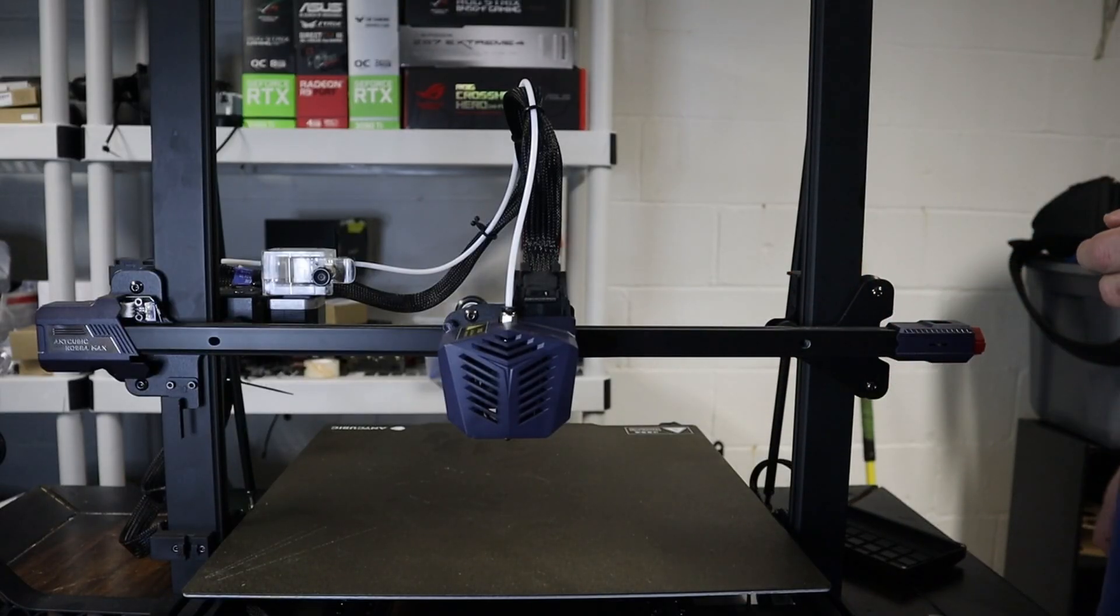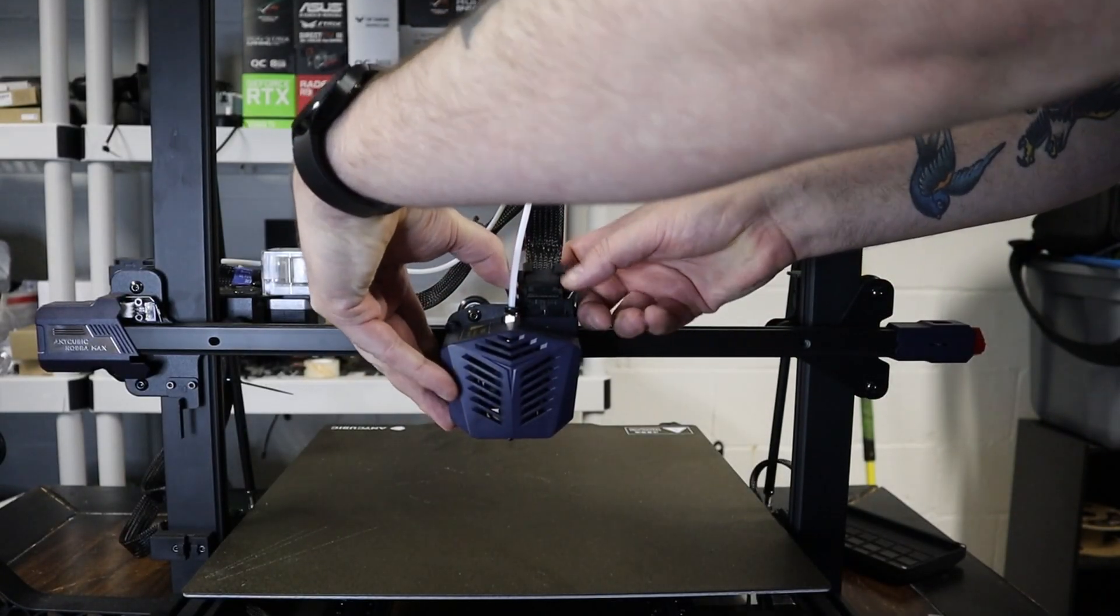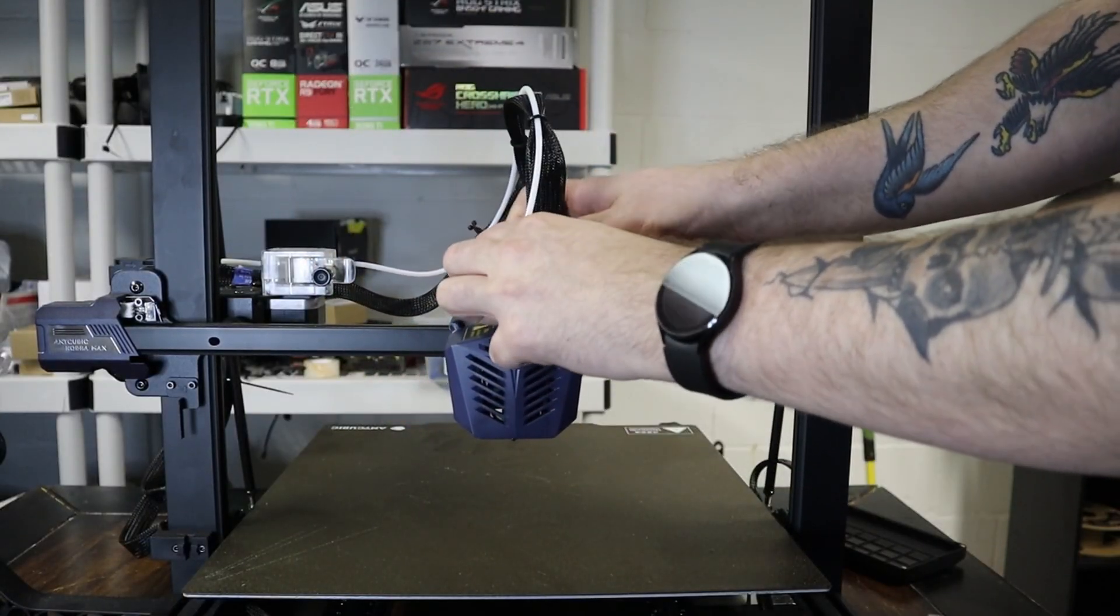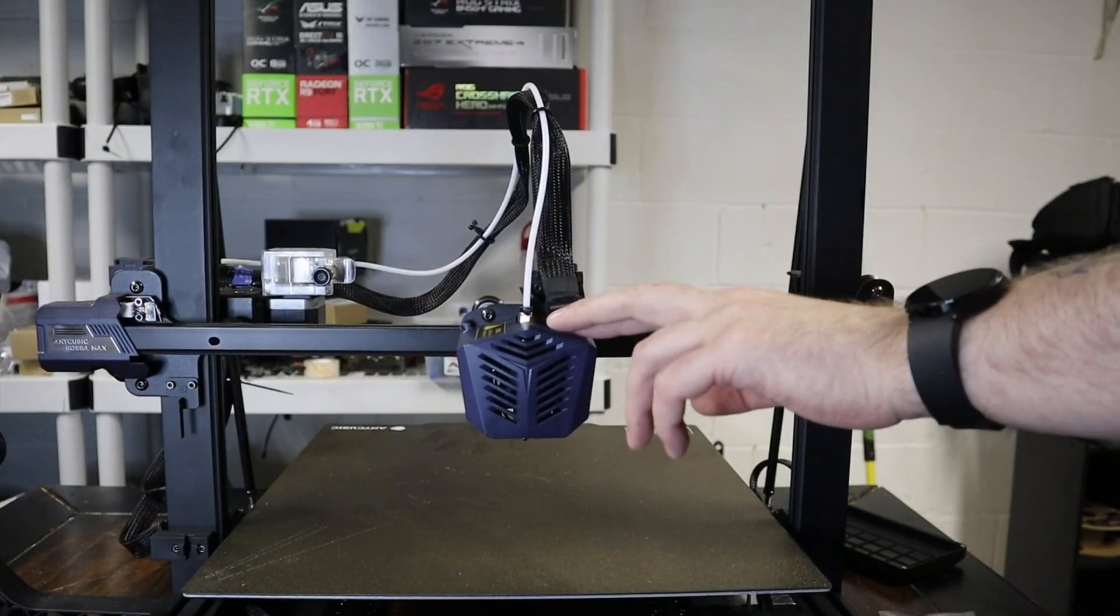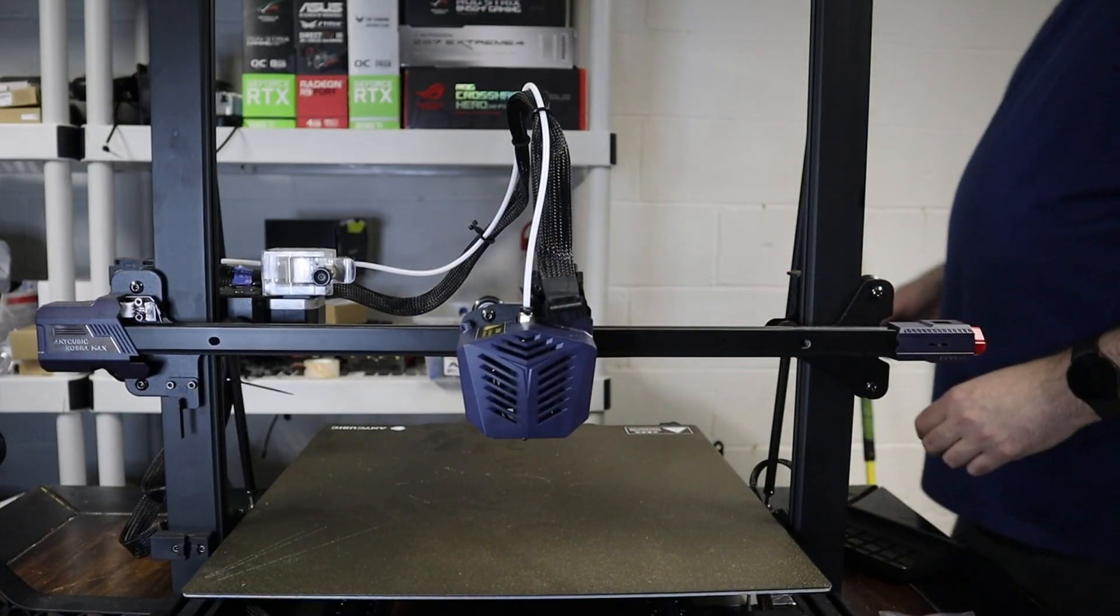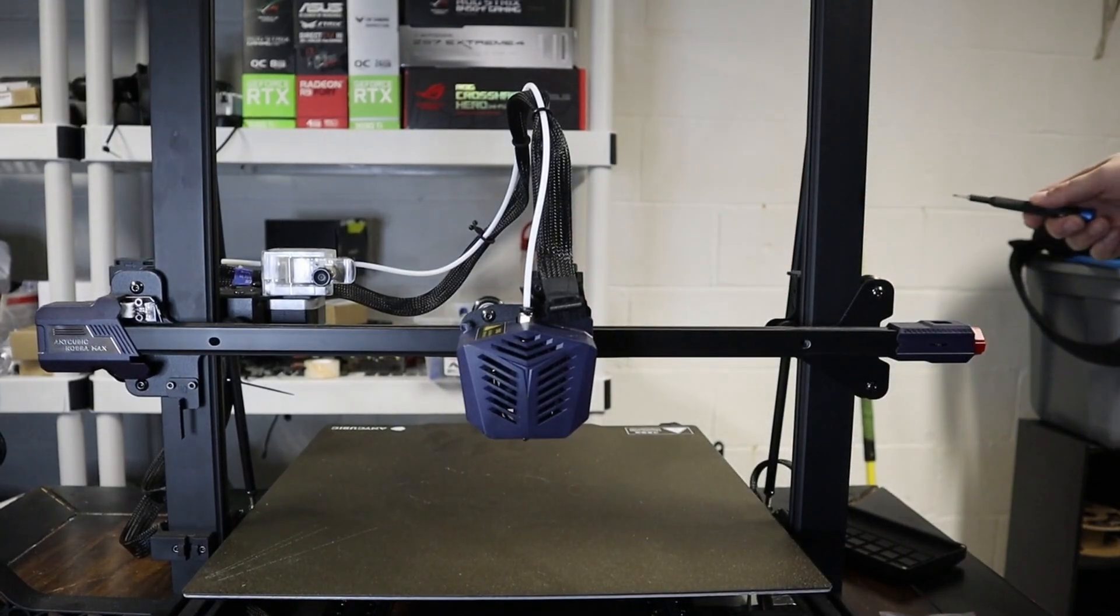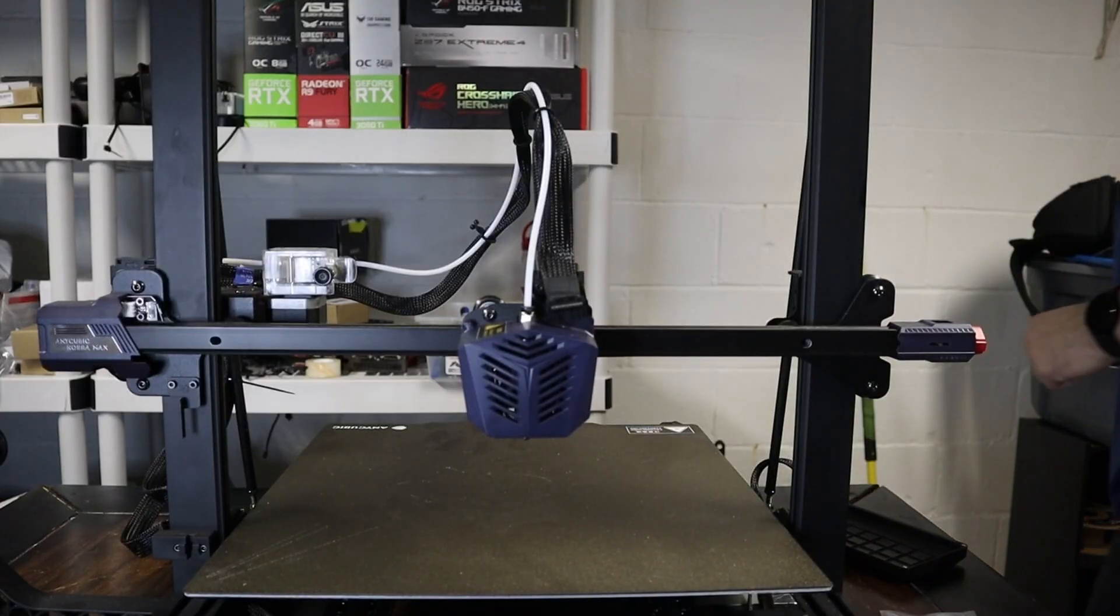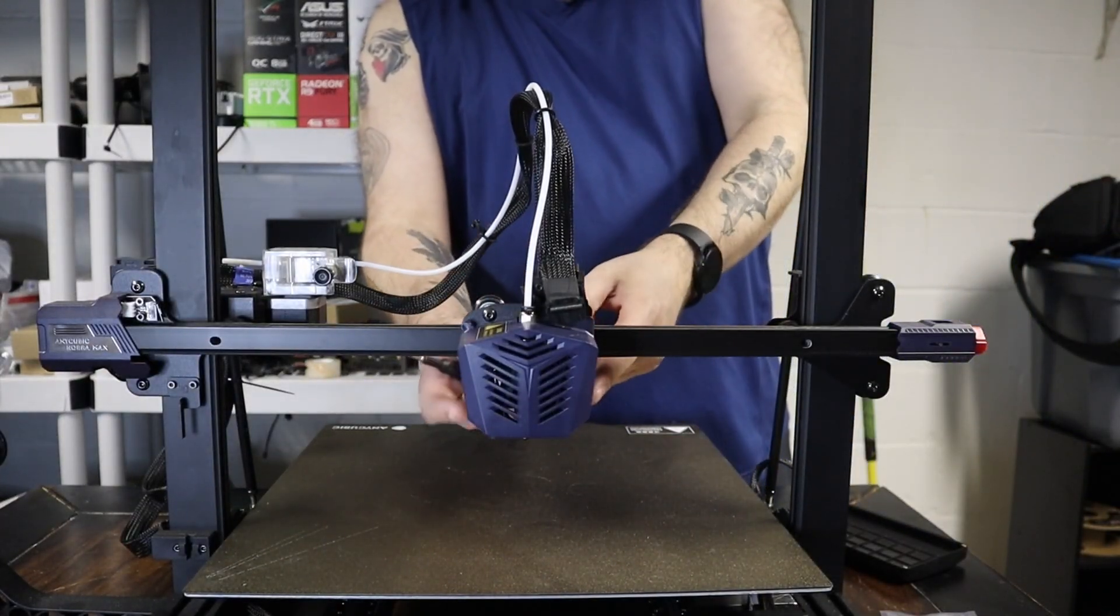I apologize if you can hear my other printers in the background. I'm going to take this shroud off. There are four bolts in the back - one here, one here, one here, and one down here.